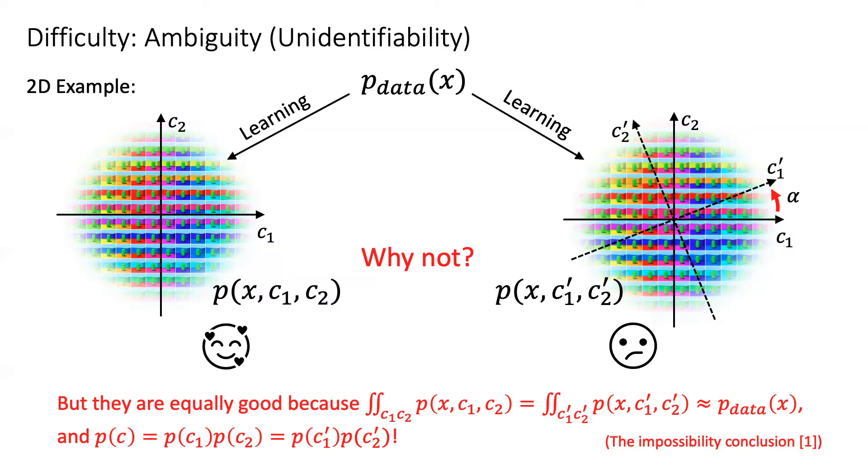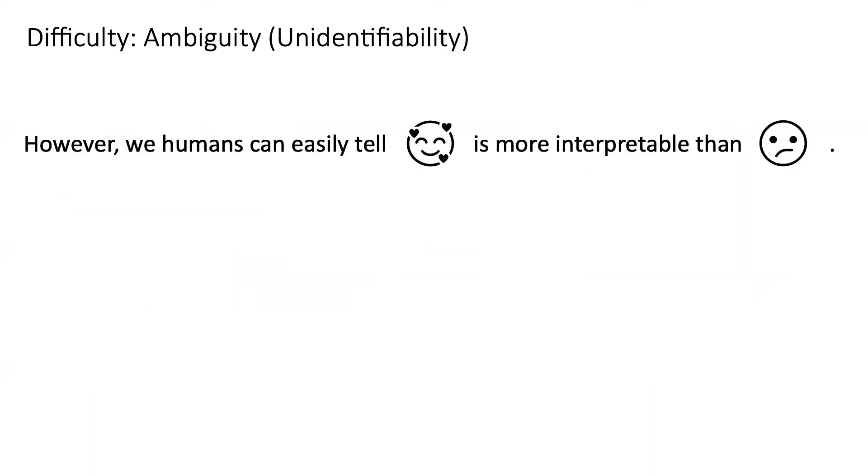This indicates that unsupervised disentangled representation learning is in theory impossible. However, we still observe that humans can easily tell the left one is more interpretable than the right one, indicating there must be some biases about human understandable concepts.